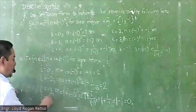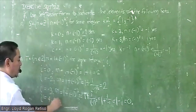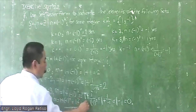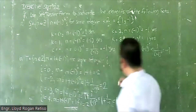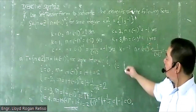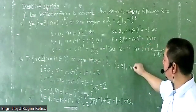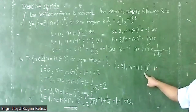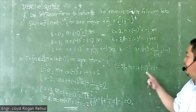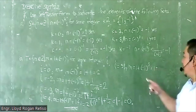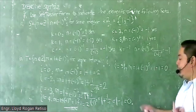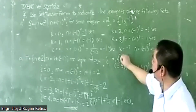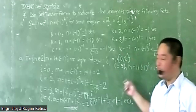If i equals 4, then m equals 1 plus (-1)^4, which equals 1 plus 1 equals 2. If i equals 5, then m equals 1 plus (-1)^5, which equals 1 plus negative 1 equals 0. So the elements are 0 and 2. Therefore, T equals the set {0, 2}.